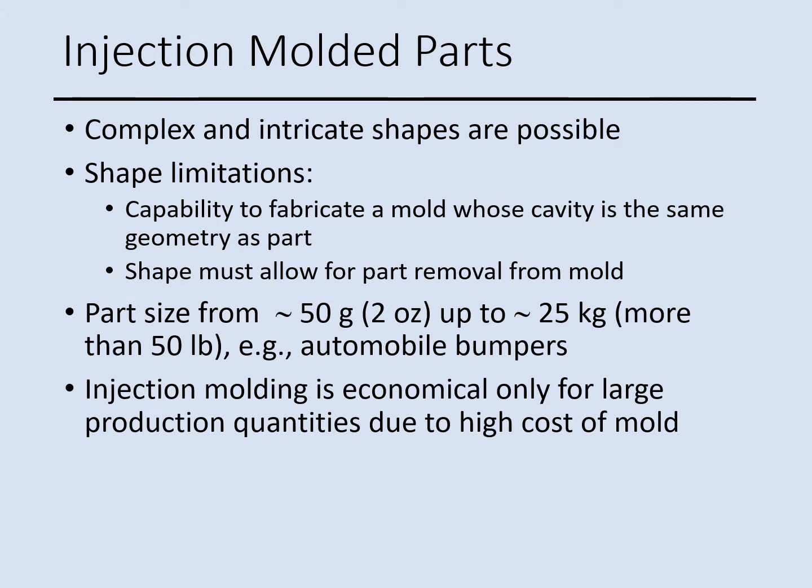The injection molded parts can be complex with intricate shapes. However, there are some limitations. One challenge is the capability of making the mold — the size of the mold is going to match the part size, so the design will be very difficult. The shape must be designed in a way that the part can be removed and ejected from the mold. In injection molding, the part tends to attach to the mold, so we need an ejection system — that is one main concern in the process.